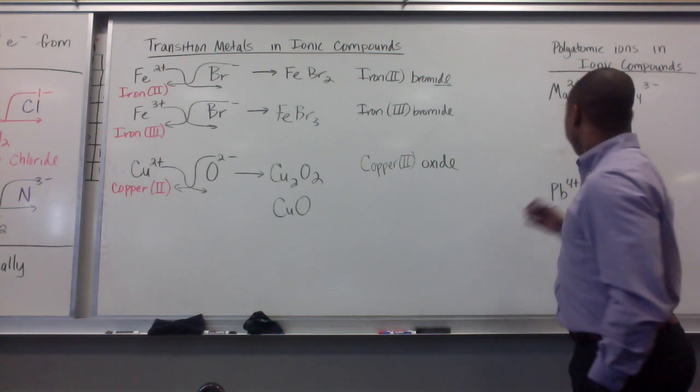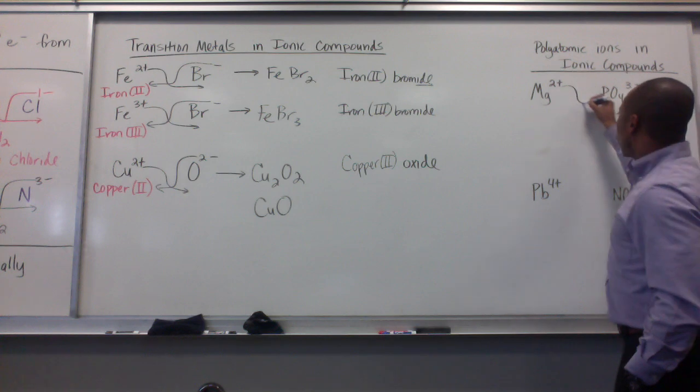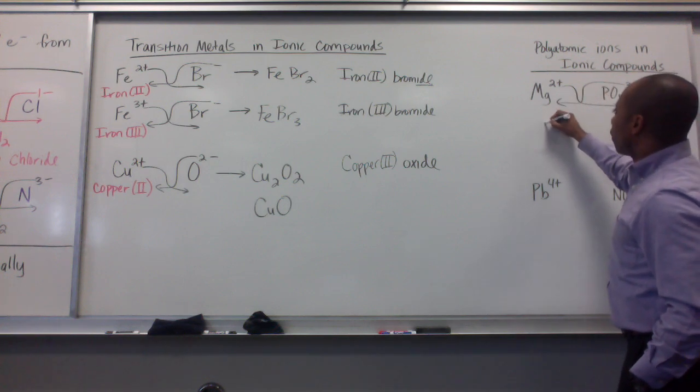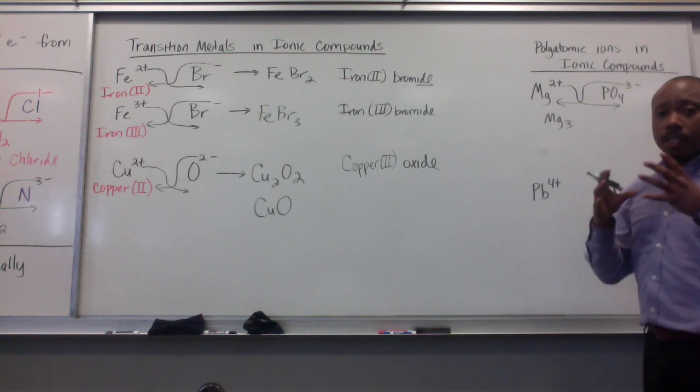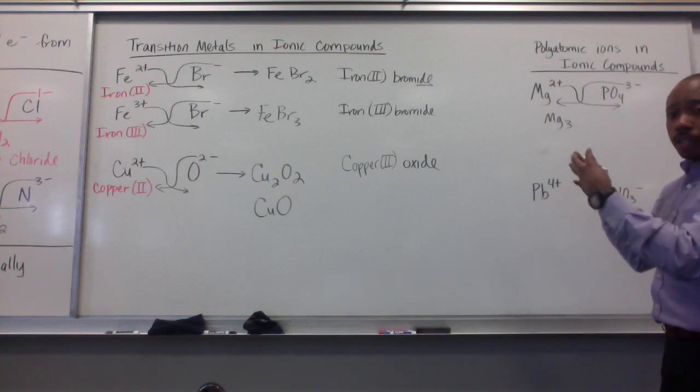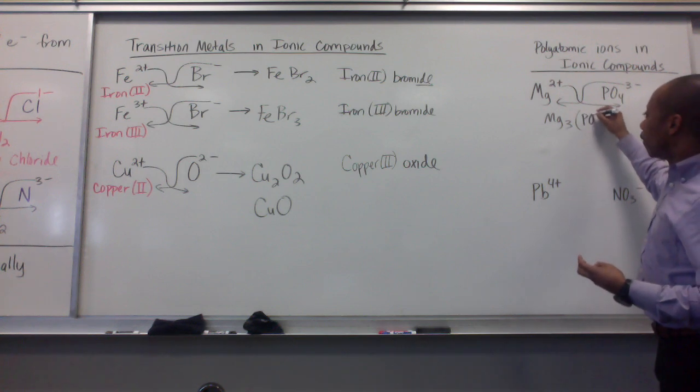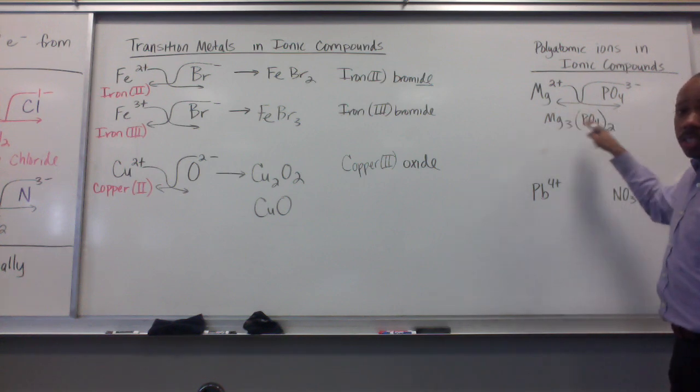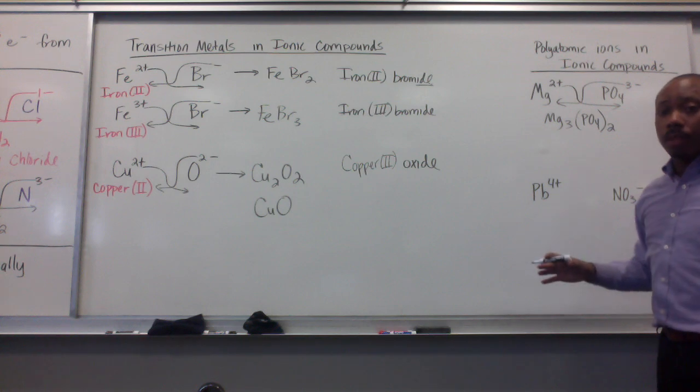I can also do this with my polyatomic ions. The crossover method applies, but another step is involved. I say my 2 plus is going to the phosphate group here, and I have this 3 minus going to the magnesium. So I put Mg, that gets the 3 here. Now this 2 goes to the phosphate. I don't multiply 2 times the 4 or anything. I simply make this 2 applicable to the entire phosphate group. I do that by using parentheses. I put my phosphate group in parentheses, and I put my 2 out here. Notice, there are no charges in my chemical formula because this is considered to be an electrically neutral compound.